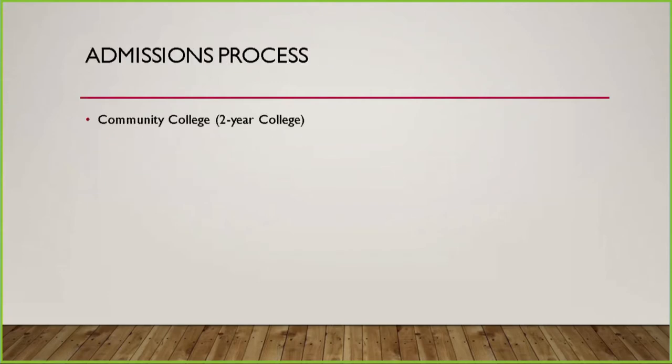The admission process at a community college is an open admissions process, meaning you can apply anytime — for any term, for example, you can apply now for summer or for the fall. Once you are admitted to a community college, you are admitted for life, so you can come back anytime to take classes.